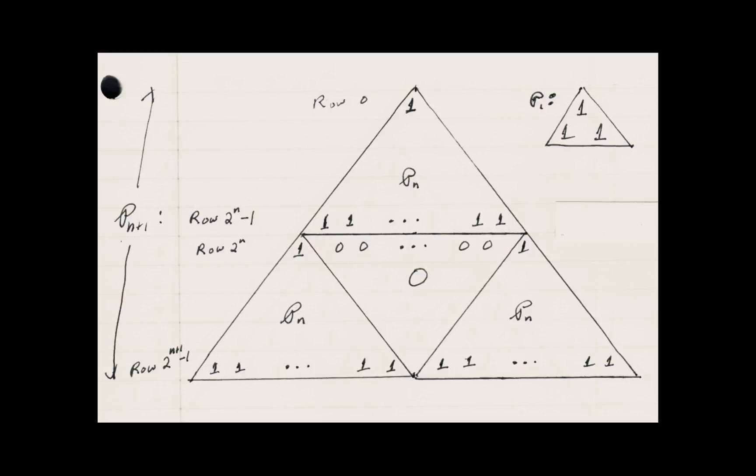So that proves the general statement, and it really only requires a wordy proof for this property of row 2^n. So that's it. Bye.